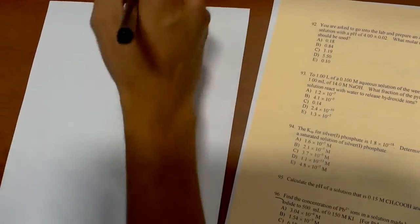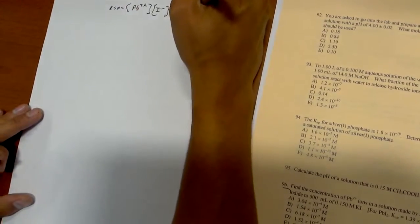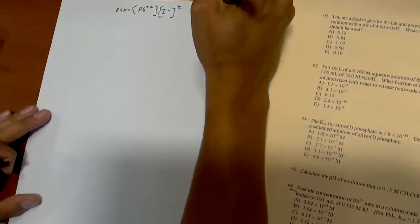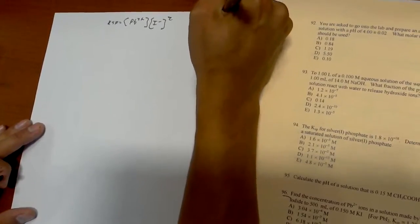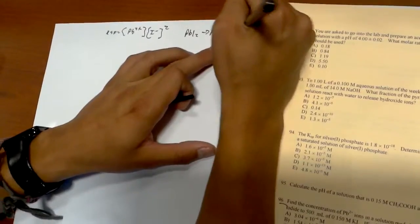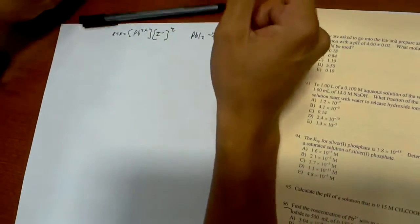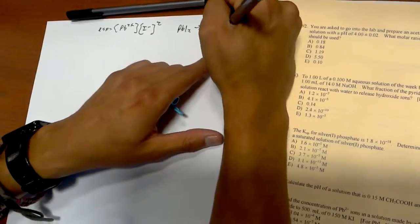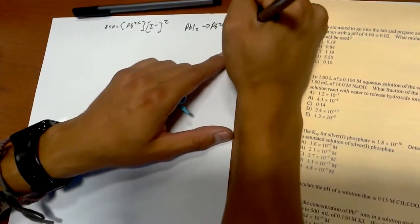So if we write this out, the reaction is going to be PbI₂ yields Pb²⁺ plus I⁻, and the I⁻, they told us, was 0.15 molar.